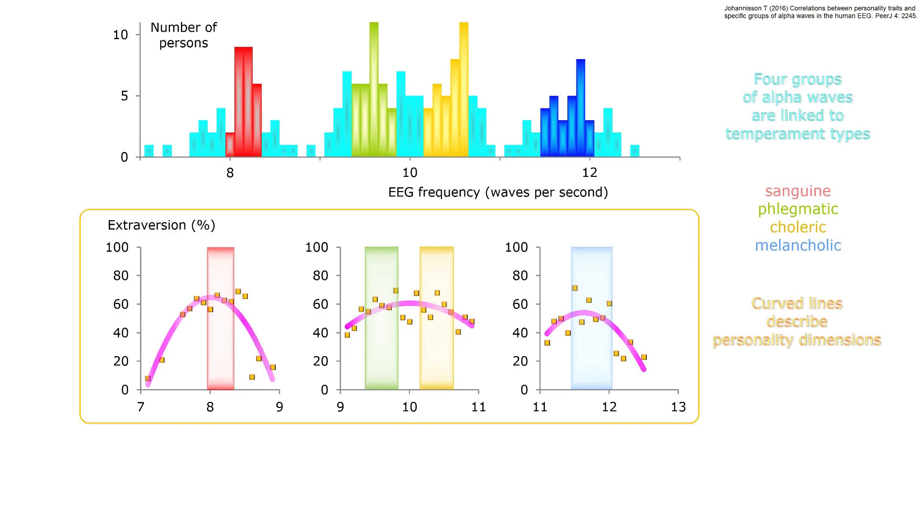Curved lines describe the link between personality dimensions, such as extroversion, and the alpha waves. Having waves in the centers leads to a high degree of extroversion. On the other hand, having waves in the surrounding areas results in a much lower degree of extroversion. There are differences in the degree of extroversion among the centers, but they are small. The big difference is between the surrounding areas and the centers.